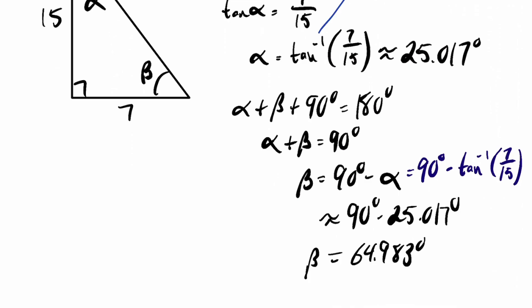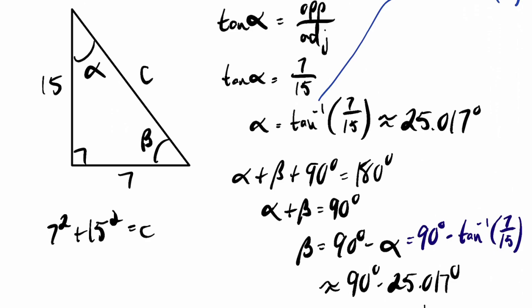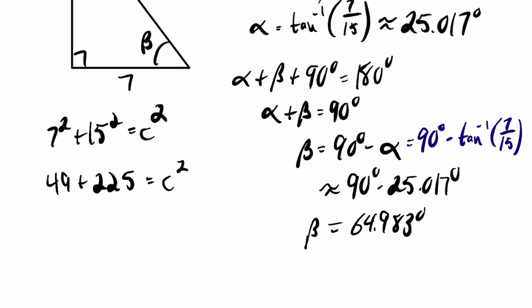Anyway, so we found alpha, we found beta. Now we need the hypotenuse, which, again, is not that hard. It's just Pythagorean theorem. So I'm going to call this C, you know, A squared, B squared, C squared. So 7 squared plus 15 squared equals C squared. So what is that? 49 plus 225 equals C squared. So what is that? 274 equals C squared. So the square root of 274 is the value of C.